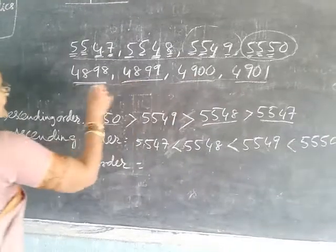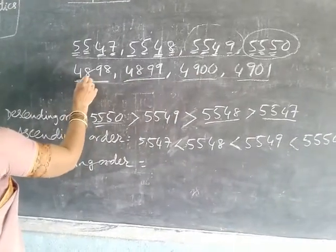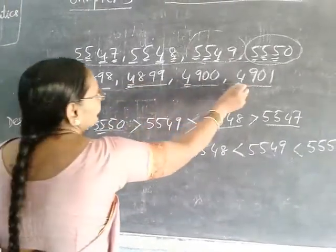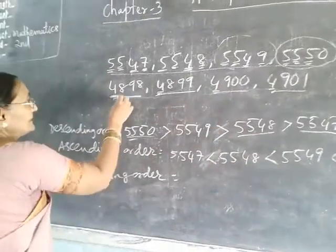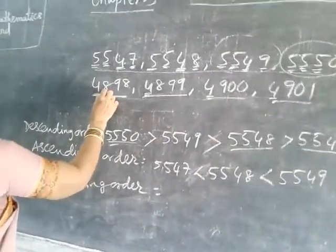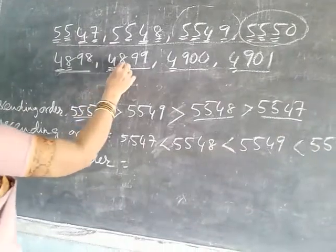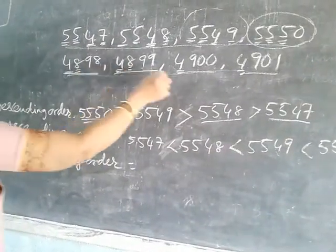First, you compare the numbers. Here, thousand's place is the same — four is there. Then you come to the second digit, that is the hundred's place. Hundred's place — eight is there in both. Both are same.